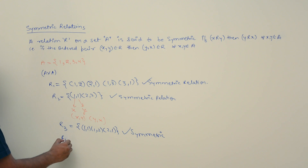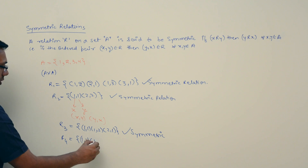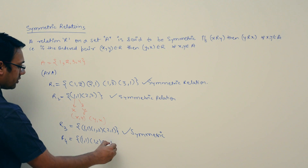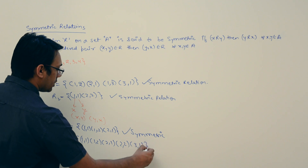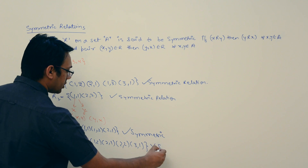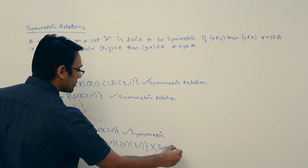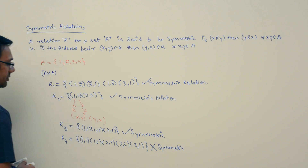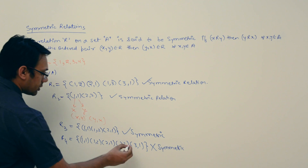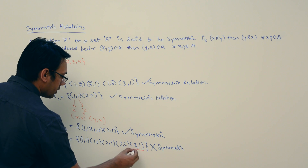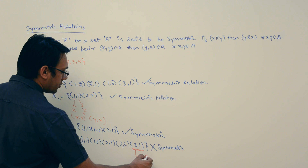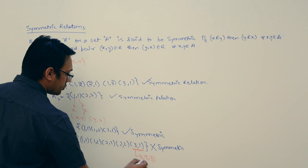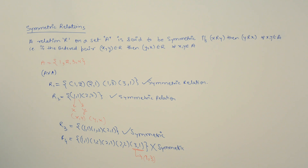If I have a relation R4 equal to {(1,1), (1,2), (2,1), (2,3), (1)} — wait — {(1,1), (1,2), (2,1), (2, and 3, 1)}, this relation is not symmetric. Why? Because if we have (3,1), then for the relation to be symmetric we should also have (1,3), but we don't. So this relation is not symmetric.